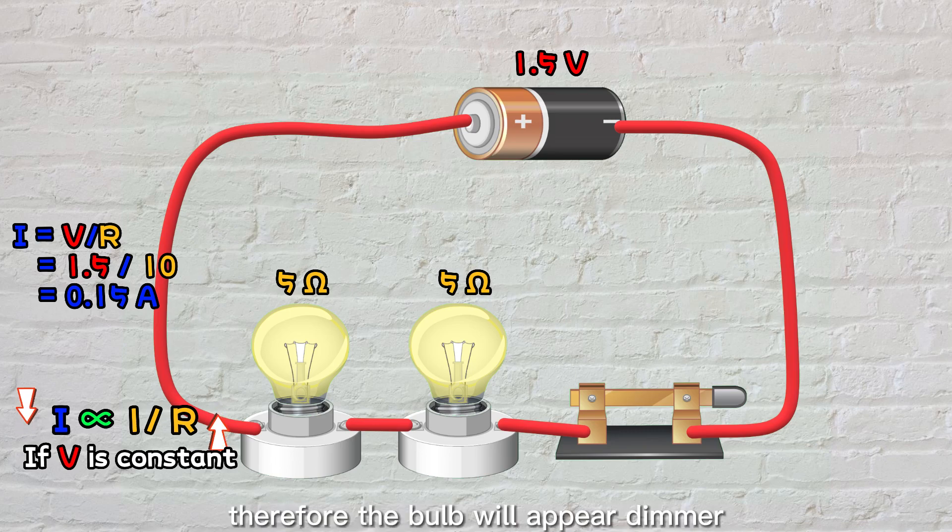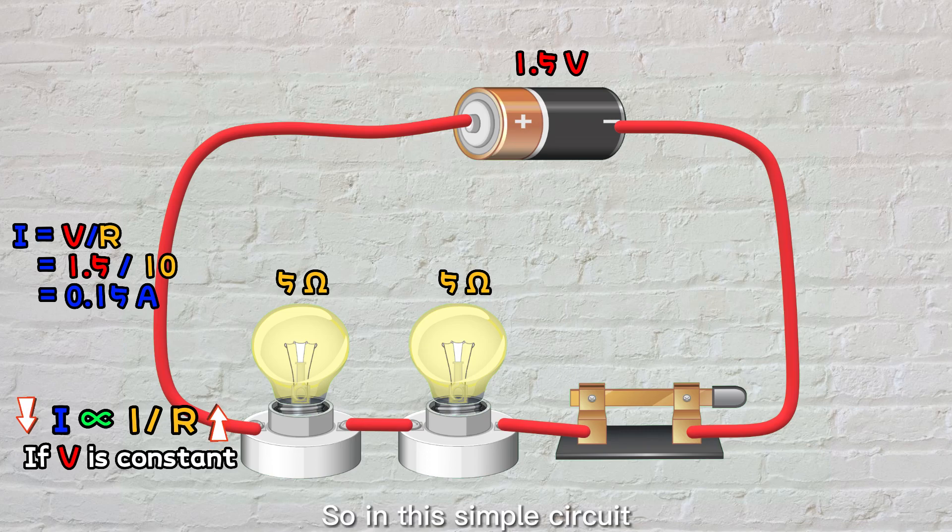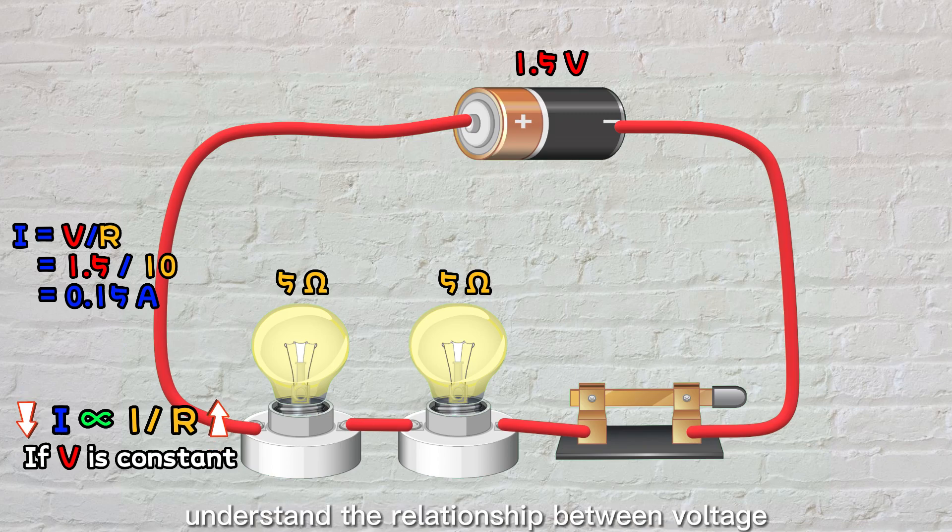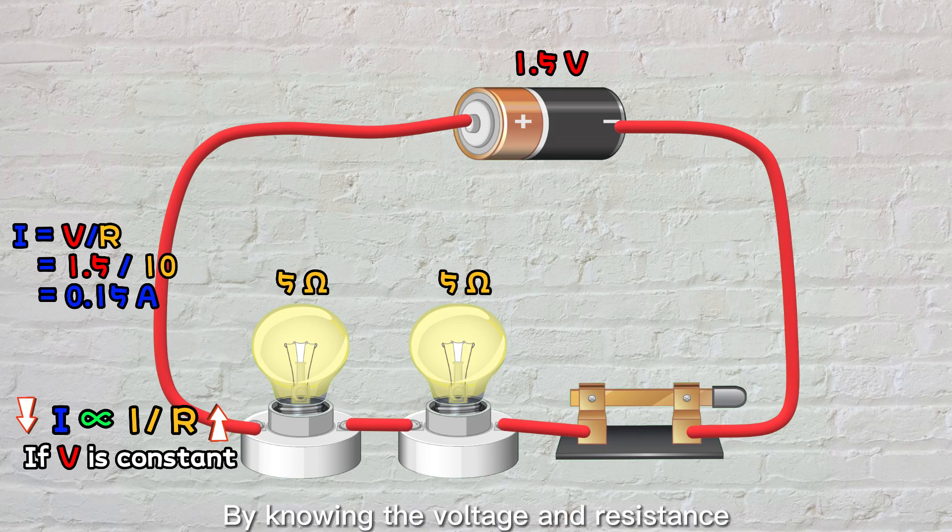So, in this simple circuit, we can see how Ohm's law helps us understand the relationship between voltage, current, and resistance. By knowing the voltage and resistance, we can calculate the current flowing through the circuit.